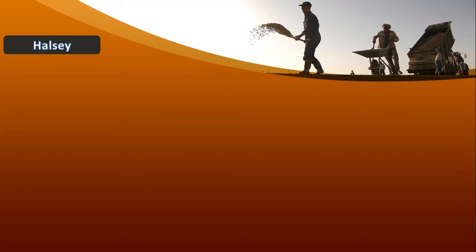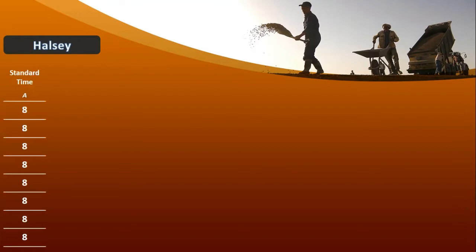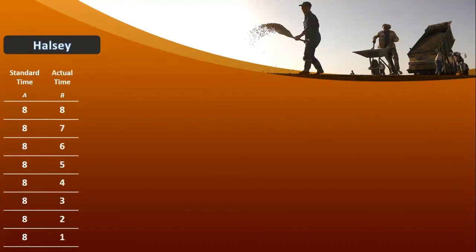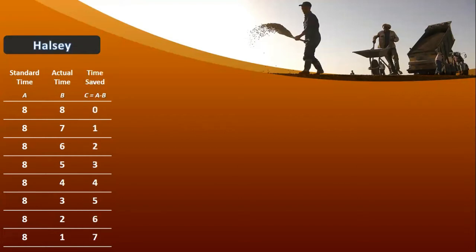Let's move to the solution. Column A: Standard Time — is ke andar 8 hours standard time hai. Second column: Actual Time — kitna time lag raha hai: 8 hours, 7 hours, 6 hours, 5 hours, 4 hours. To time saved kitna hoga? Agar 8 hours standard hai aur 8 hours actual, to koi saving nahi hogi — zero hours. Phir gradually 1 hour save hoga, 2 save honge — aapki saving increase hogi jab actual time kam hoga.